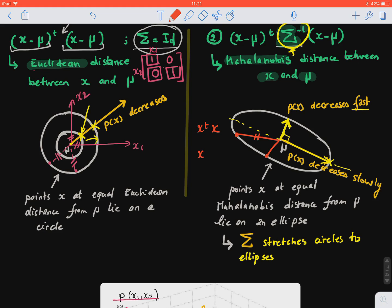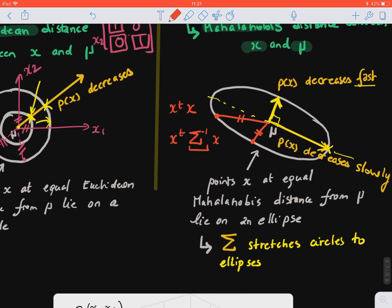But if you compute them using the Mahalanobis distance, (x - μ)ᵀ Σ⁻¹(x - μ), they are actually equal.